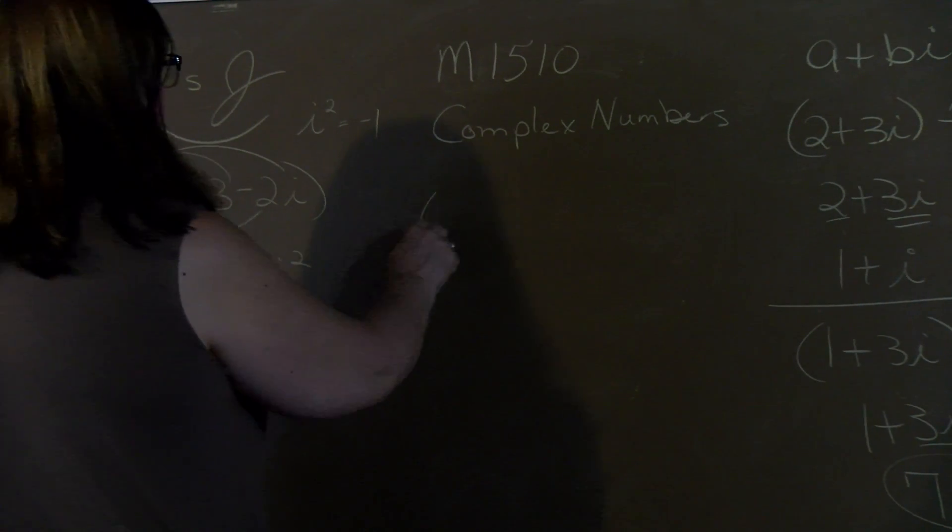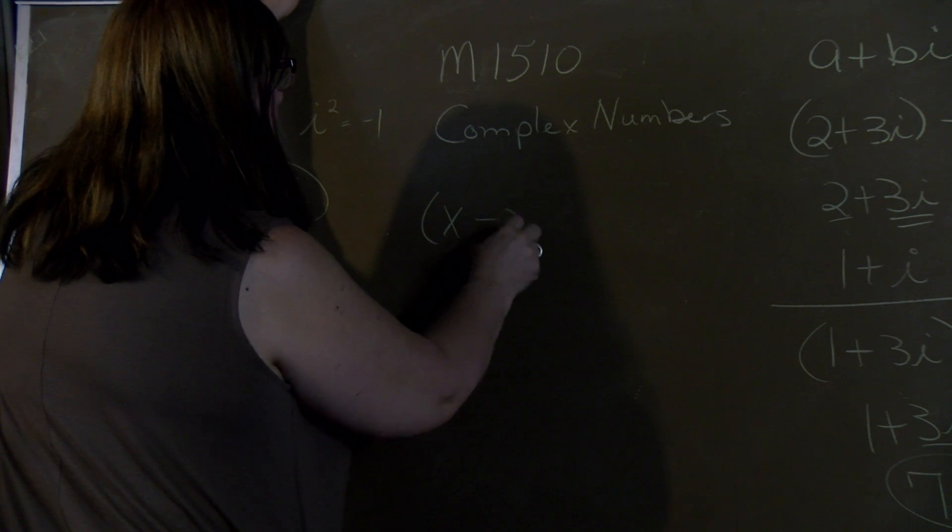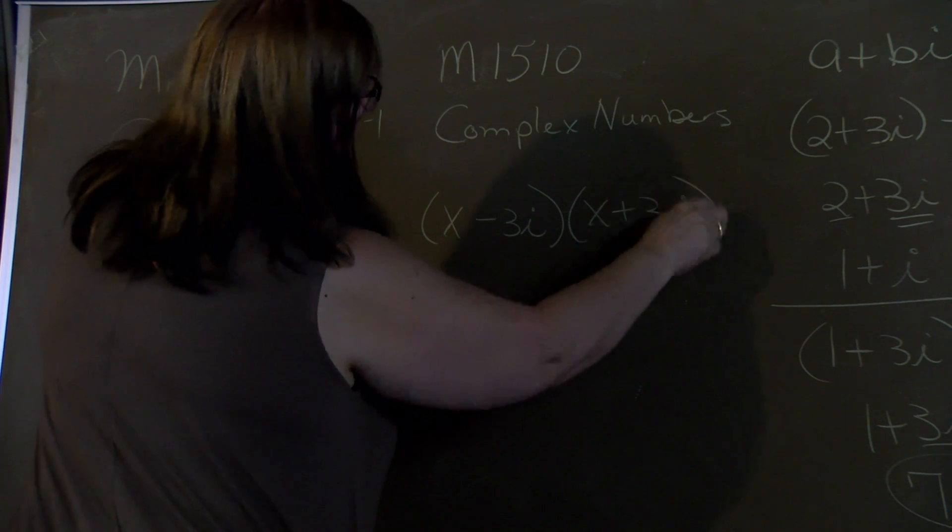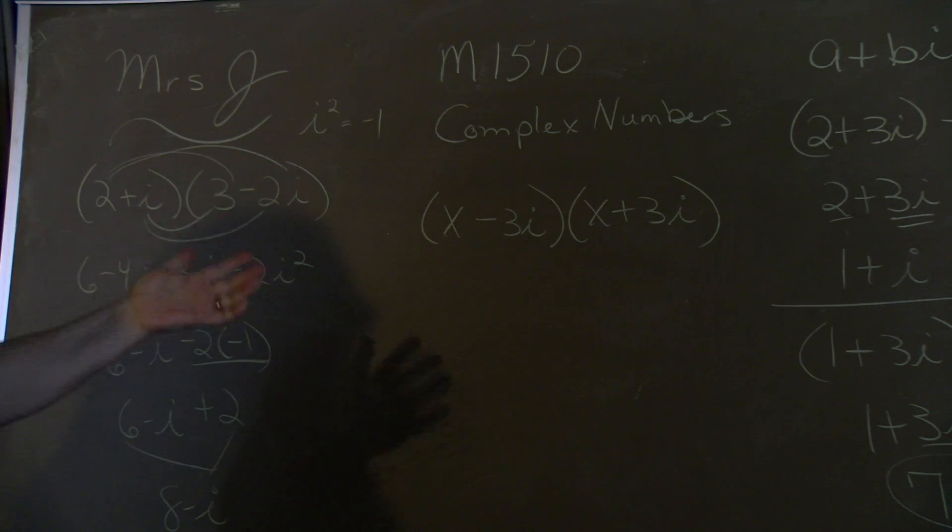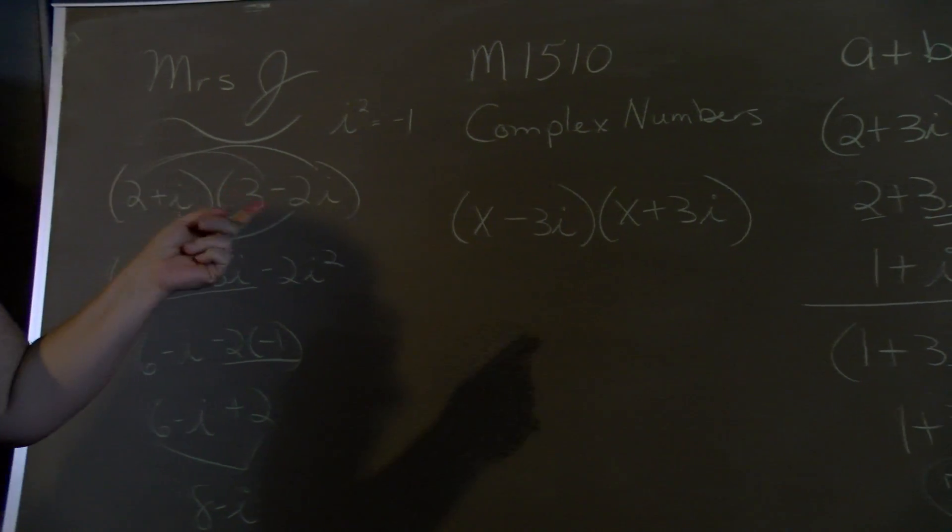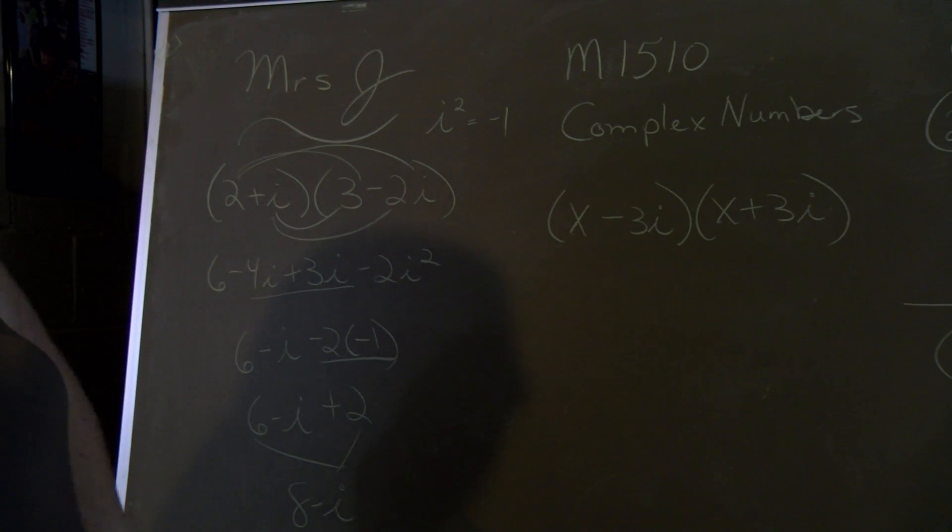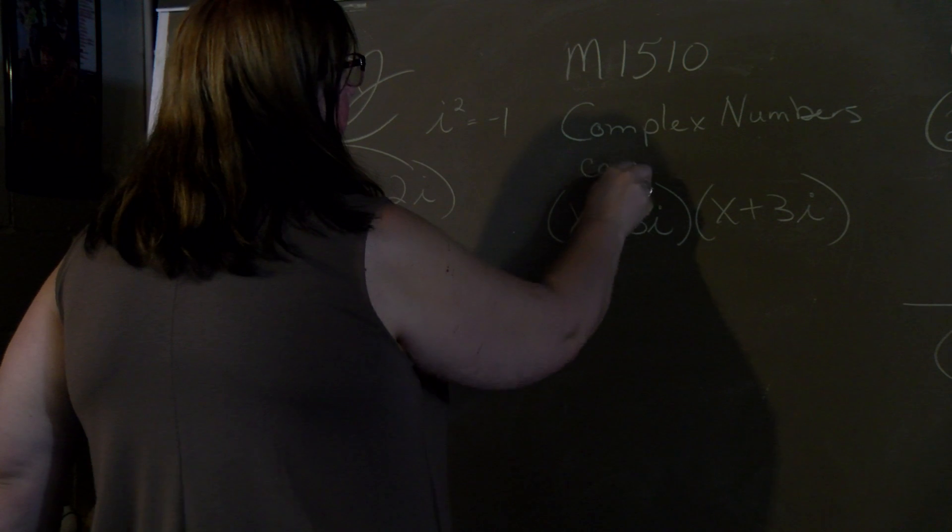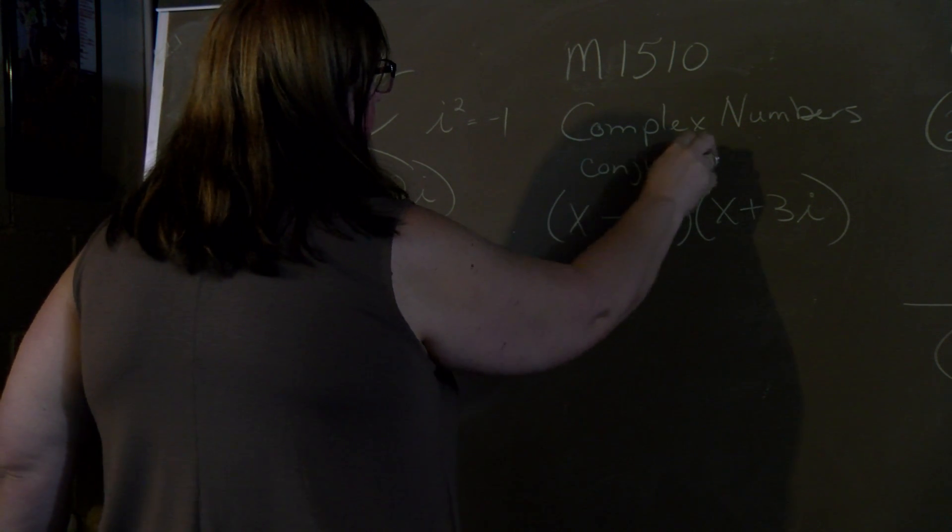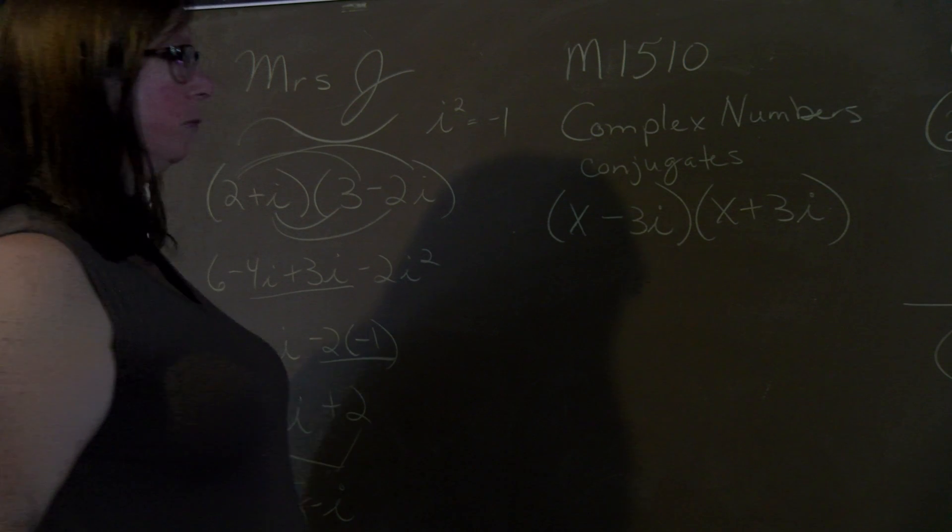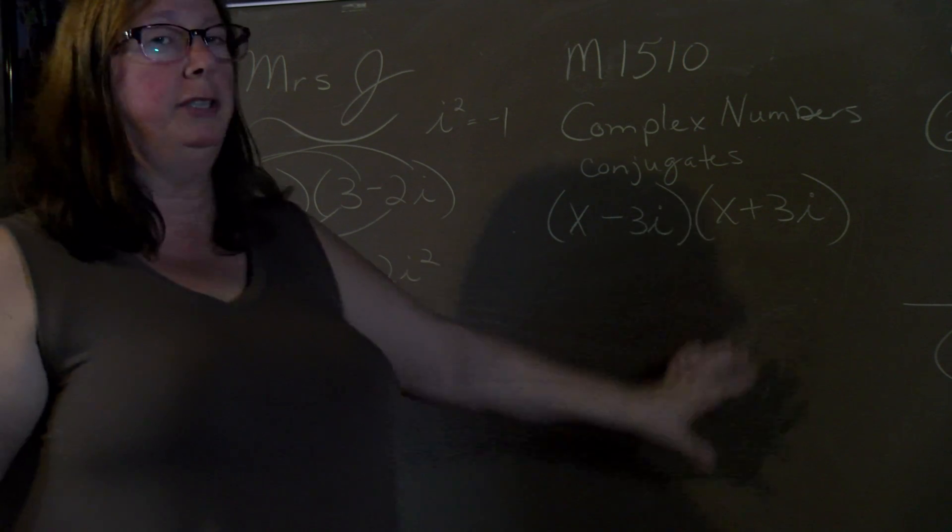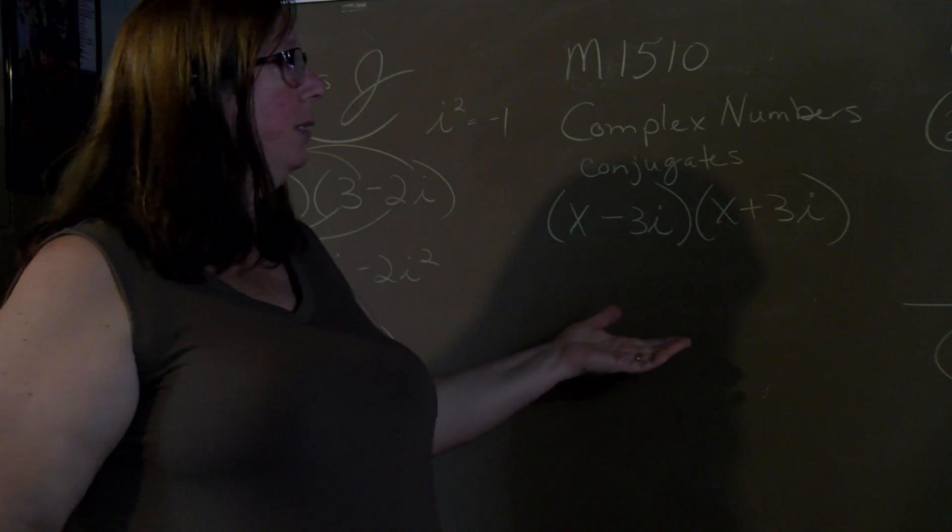Try one more like that. Now notice these two are similar. They're exact same quantities except the opposite middle term. And that makes them conjugates. Conjugates are important when you're working with fractions. And when you multiply these conjugates, the i's will disappear. So it will no longer be an imaginary number. And that's why it's important.